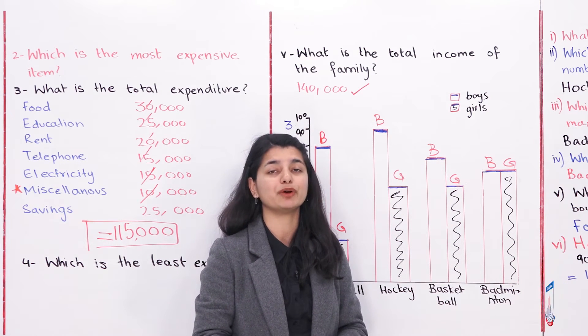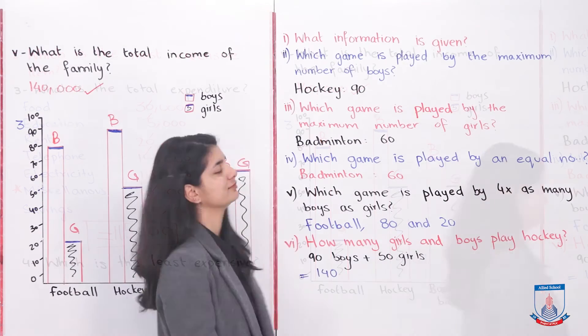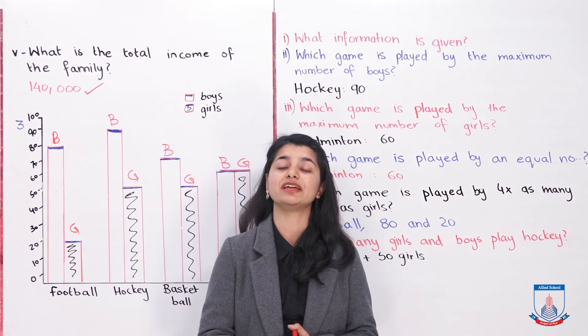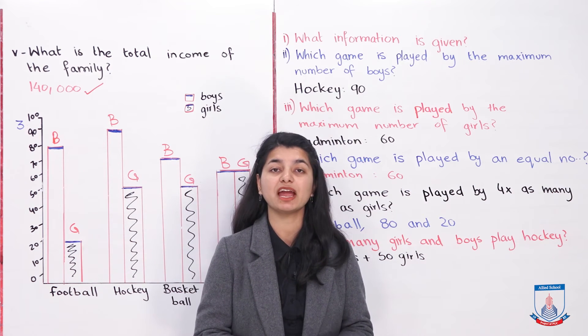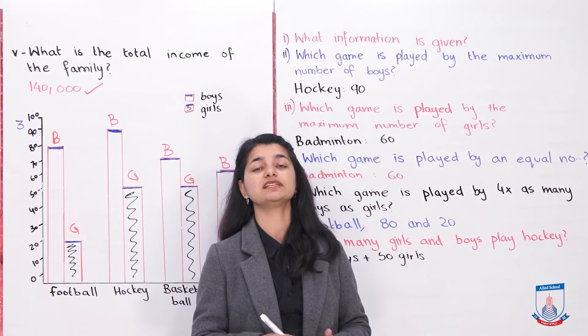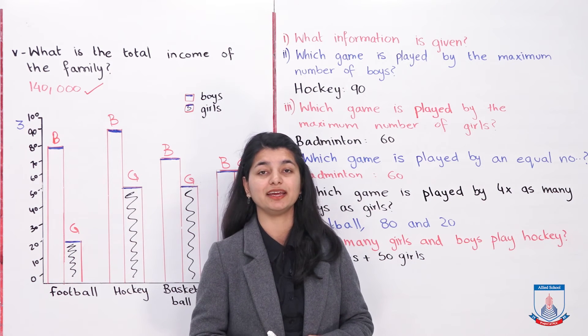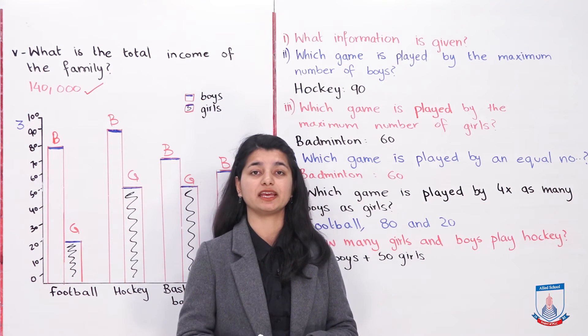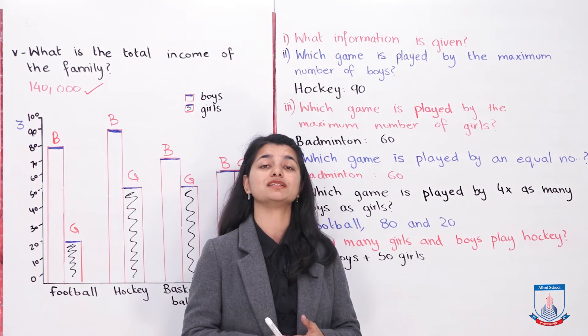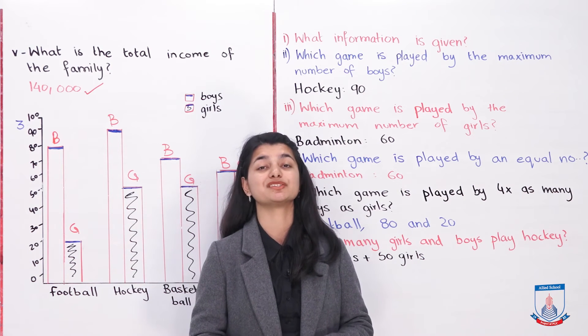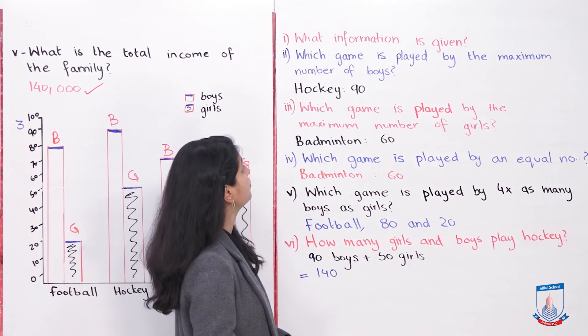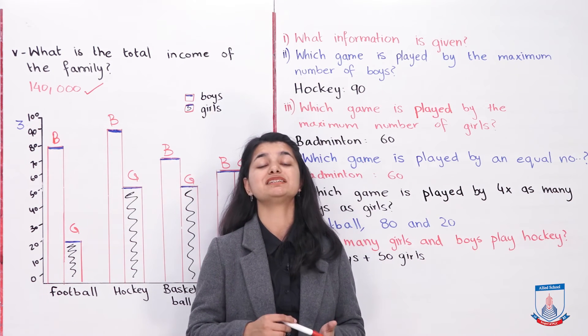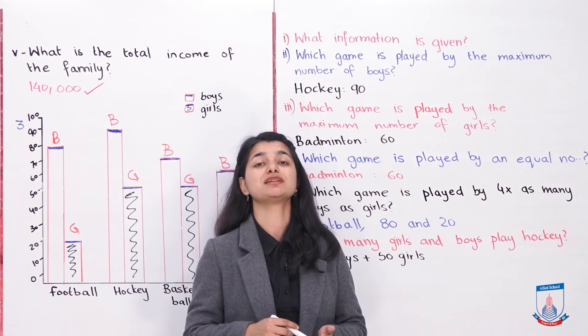Let's answer these questions. Question number one is: what information is given in this graph? Not difficult at all. This graph tells that the different students in a school, how many boys or girls are playing sports. Which sport is played by the number of girls and boys is what they are telling you. The second part is: which game is played by the maximum number of boys?